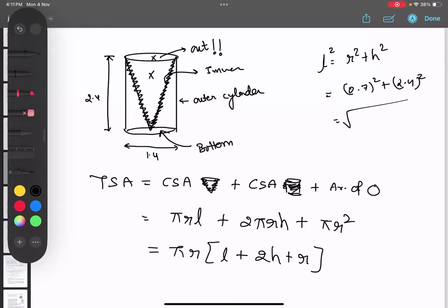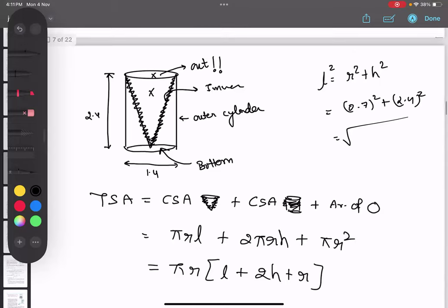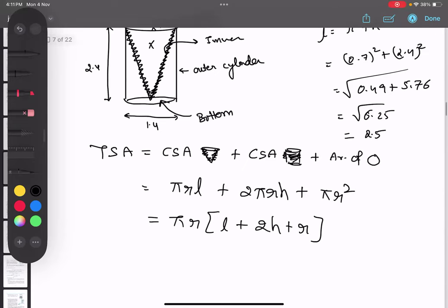Yes, you can take a screenshot. 0.7 × 0.7 is 0.49. Now 2.4 × 2.4 is 5.76. This equals 6.25, which would be 2.5. Oh yes, 2.5.